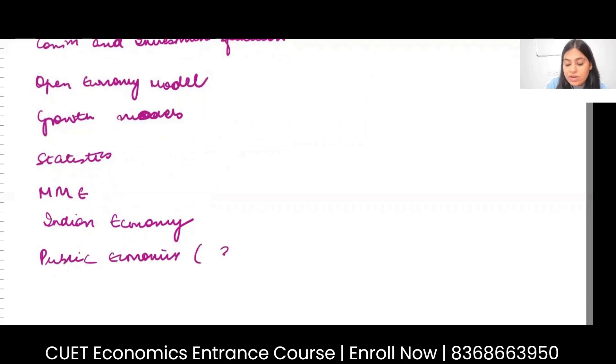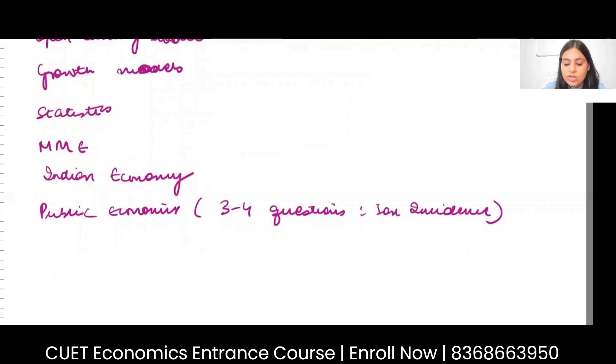This is very important. Every year, three to four questions come only on tax incidence. We will be talking about tax theory, the incidence of tax, deadweight loss, how deadweight loss is dependent on elasticities of demand and supply, and how deadweight loss is dependent on the tax rate.